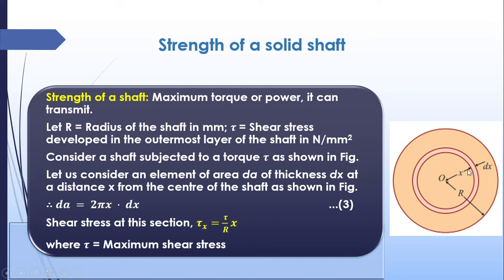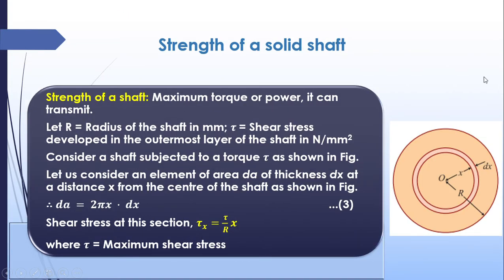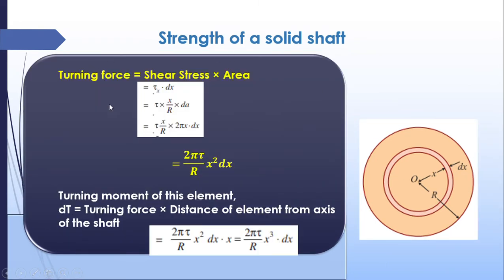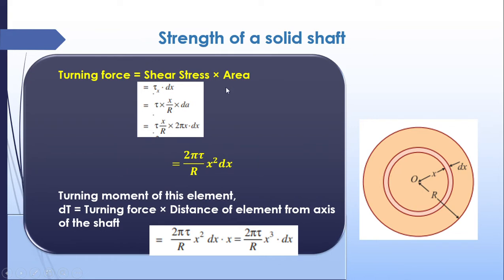The area of the small ring dA = 2·pi·x·dx. The shear stress at that section: tau_x = (tau / R)·x. The turning force equals stress times area: tau_x times dA = (tau / R)·x times 2·pi·x·dx = 2·pi·tau / R · x²·dx.